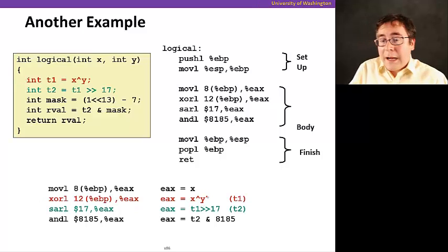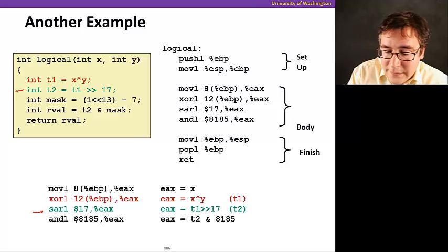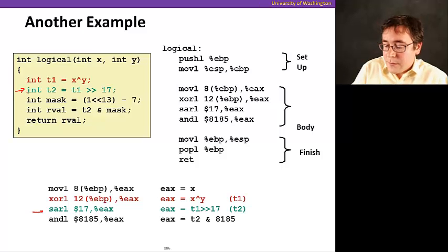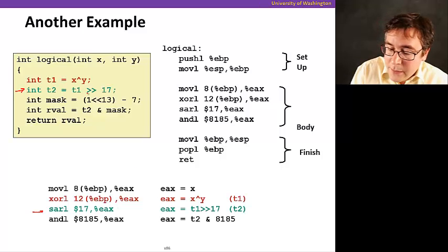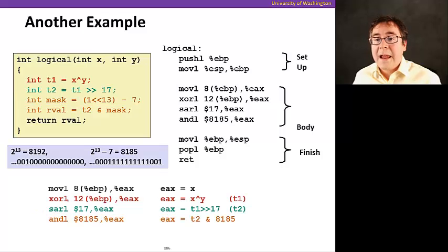Now, this instruction here is just shifting EAX right by 17 bits. So it's implementing this expression here, this statement here. And we're shifting right. So it chooses, the compiler chose the shift right instruction.